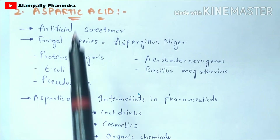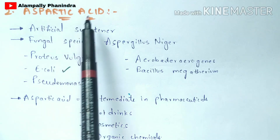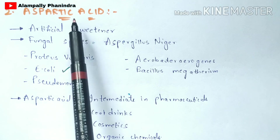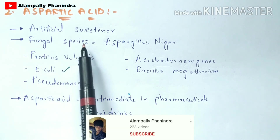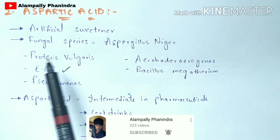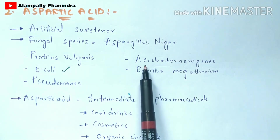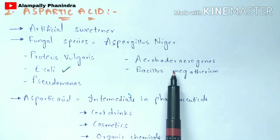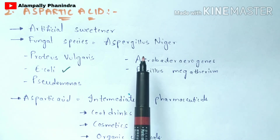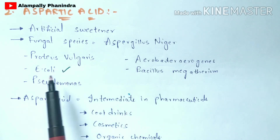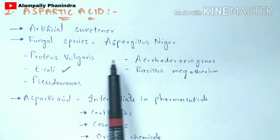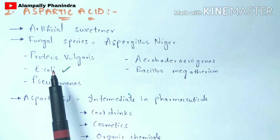Now let us discuss aspartic acid. Aspartic acid is used as an artificial sweetener and can be produced from fungus species like Aspergillus niger, and also by microorganisms such as Proteus vulgaris, Serratia coli, Pseudomonas aeruginosa, and Bacillus megaterium. In many industries, Serratia coli is most highly used for the production of aspartic acid.